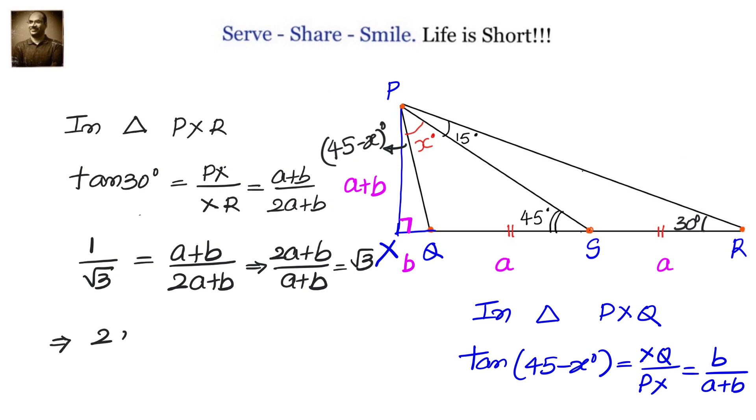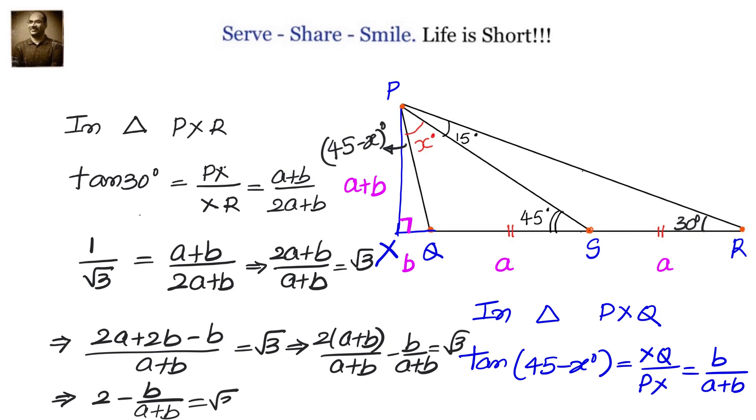So reciprocally when we take, we have 2A plus B by A plus B is root 3. I can add B and subtract B so that I can simplify that. Then I will have 2 into A plus B divided by A plus B minus B by A plus B equals root 3, which will give us on simplification 2 minus B by A plus B equals root 3, or B by A plus B equals 2 minus root 3.